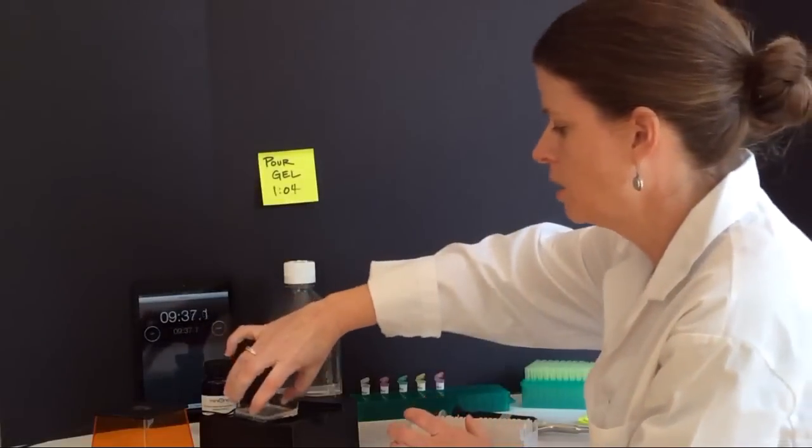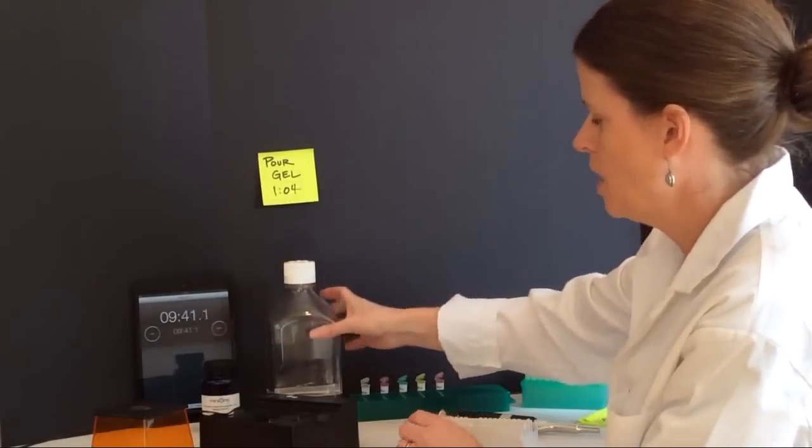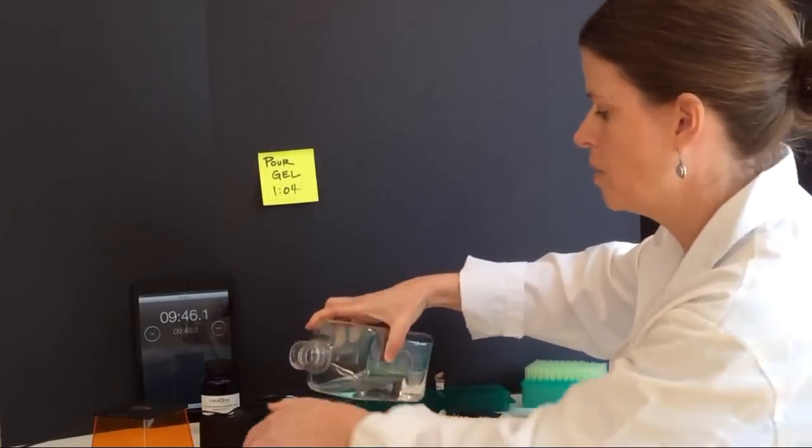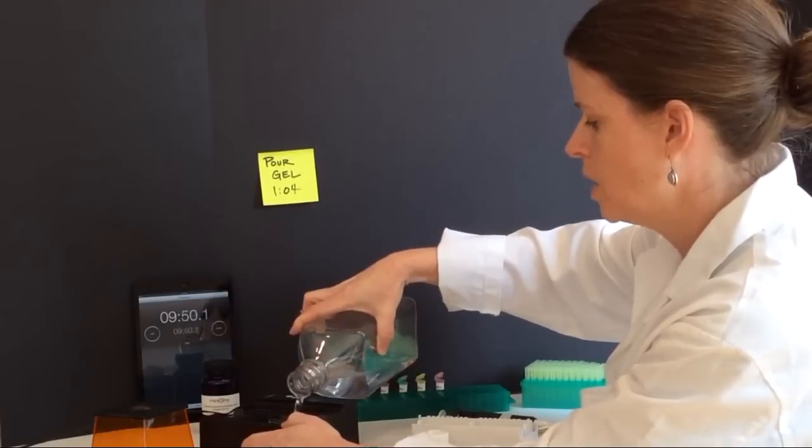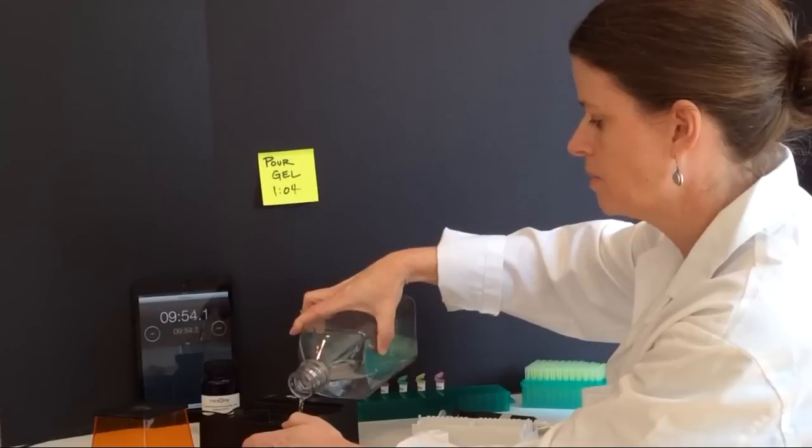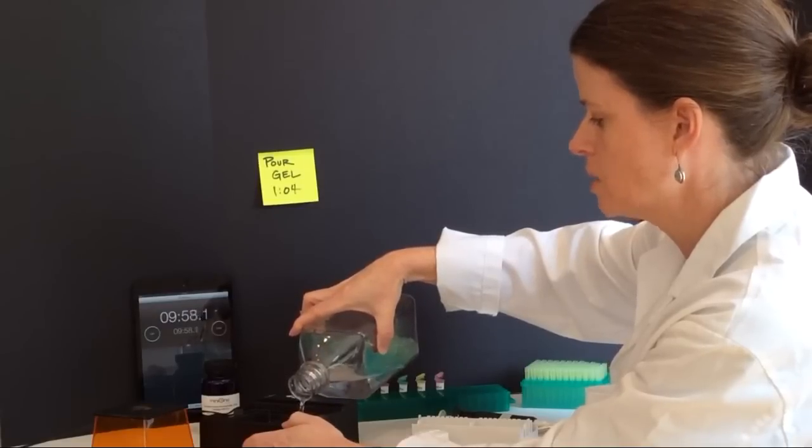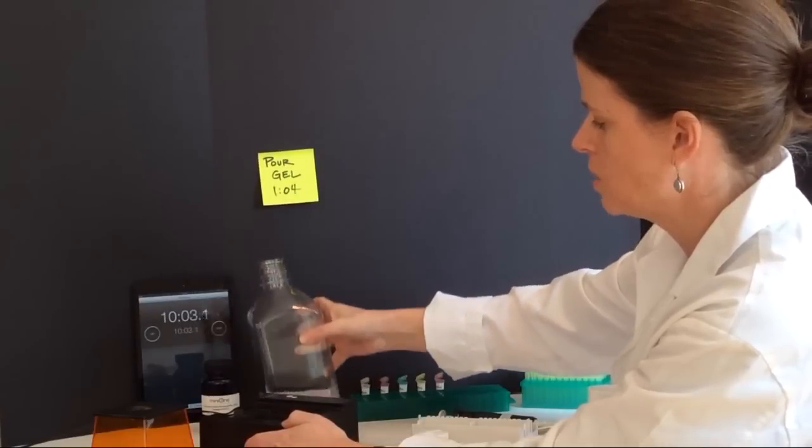Then I'll place my gel into my gel box and then I'm going to add my running buffer. This is a sodium borate running buffer that is provided for you with the kits. It comes as a 20x and then you can dilute it to 1x. I'm going to carefully make sure that I fill both reservoirs of my gel box and that I have a layer of running buffer covering my gel.